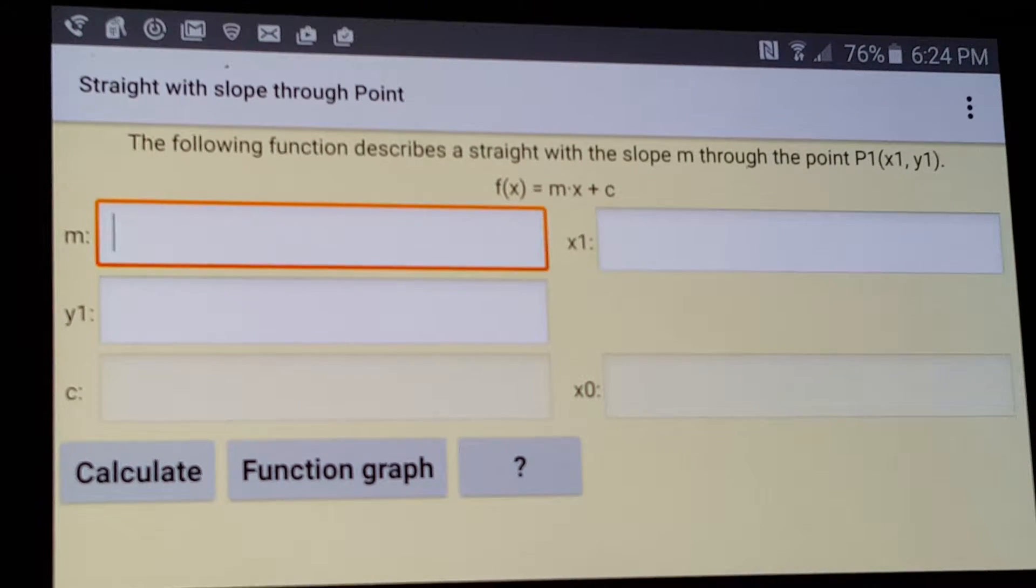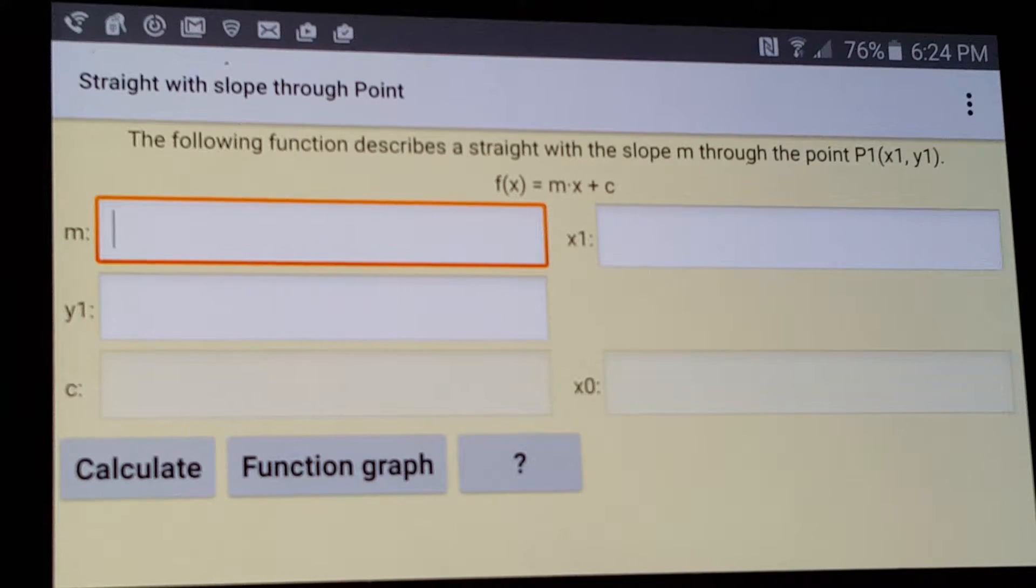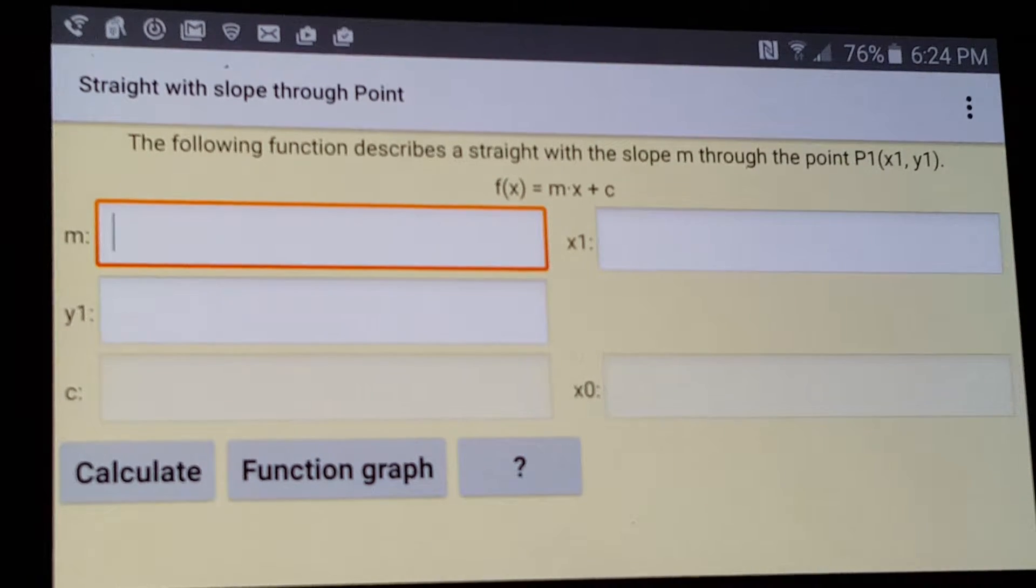It says the following function describes a straight with the slope m through the point P1, parentheses x1 comma y1, and then it says f(x) equals m times x plus c, and that is your function.